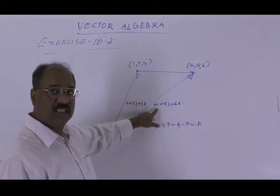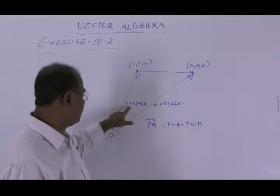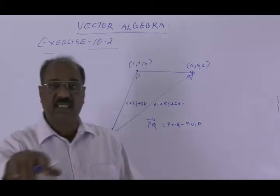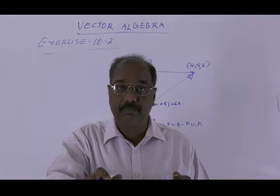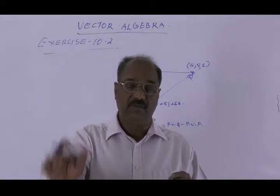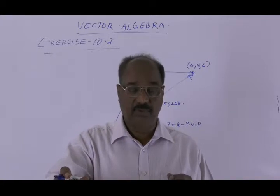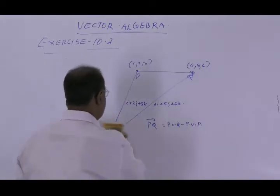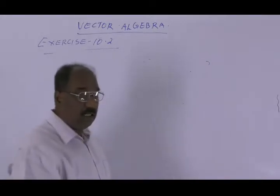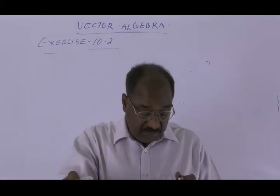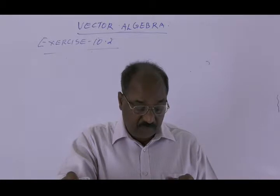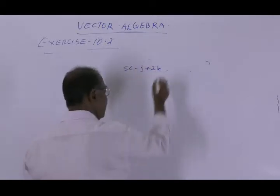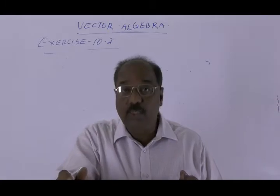The position vector of Q is 4i plus 5j plus 6k and the position vector of P is i plus 2j plus 3k. Find PQ and then divide that vector PQ by its magnitude to get the unit vector. The next problem is: find the vector in the direction of 5i minus j plus 2k with magnitude 8 units.